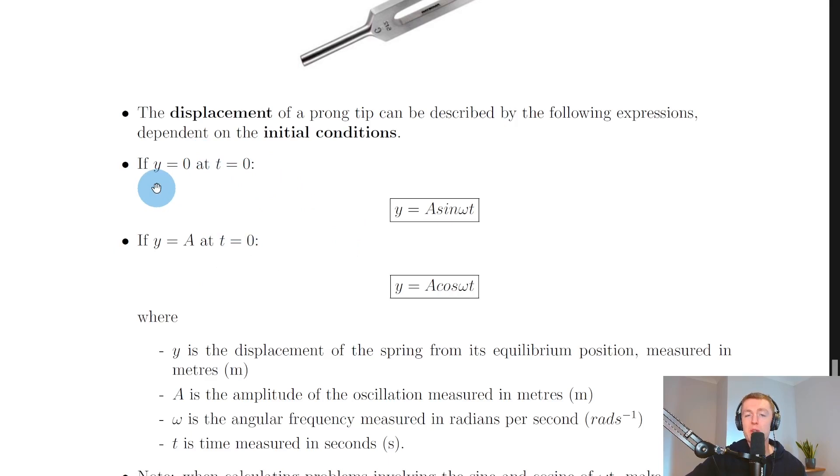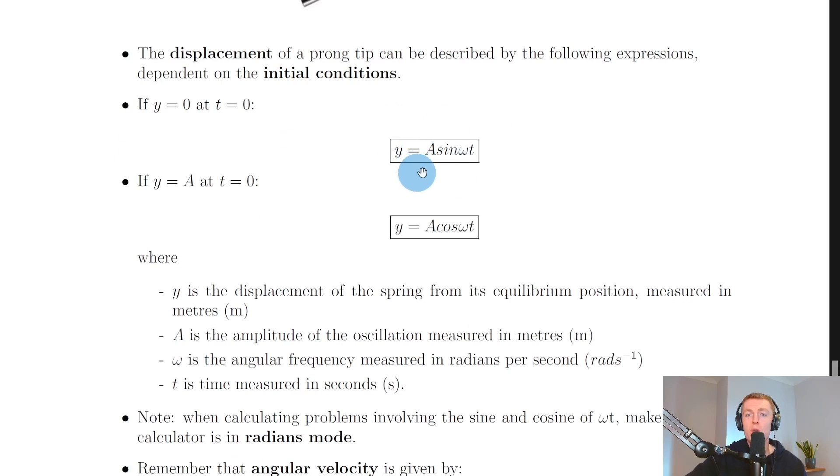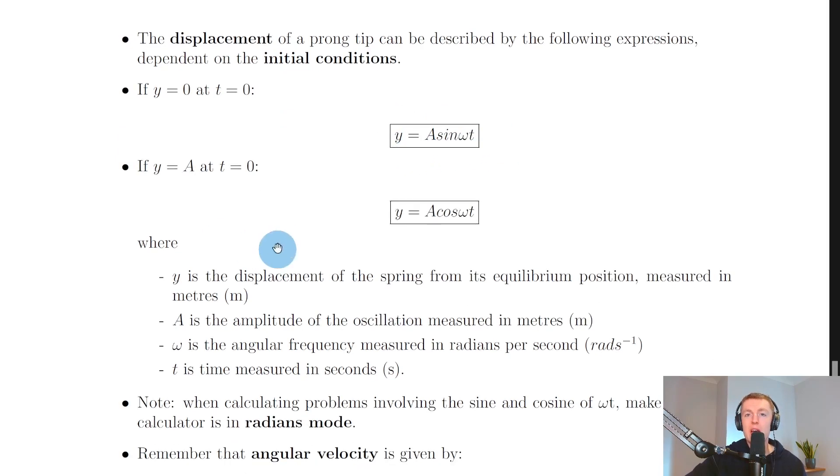If the displacement Y equals zero at time t equals zero, i.e. if the object starts from its equilibrium position or rest position, then the displacement can be described by this expression here: Y equals A sine omega t.